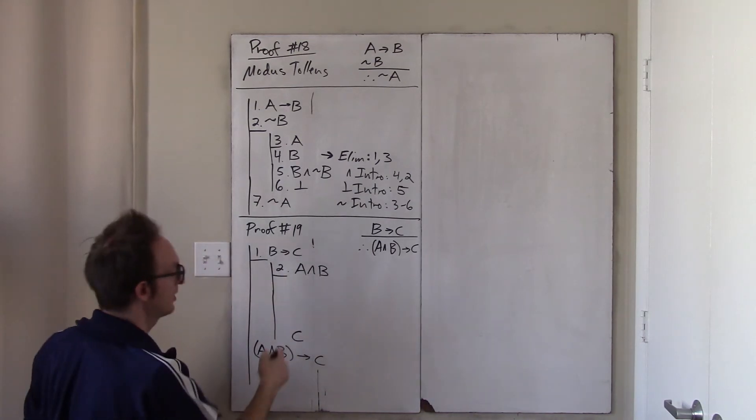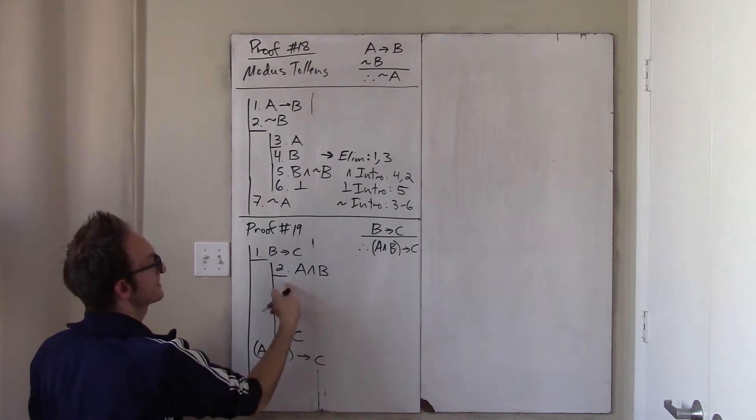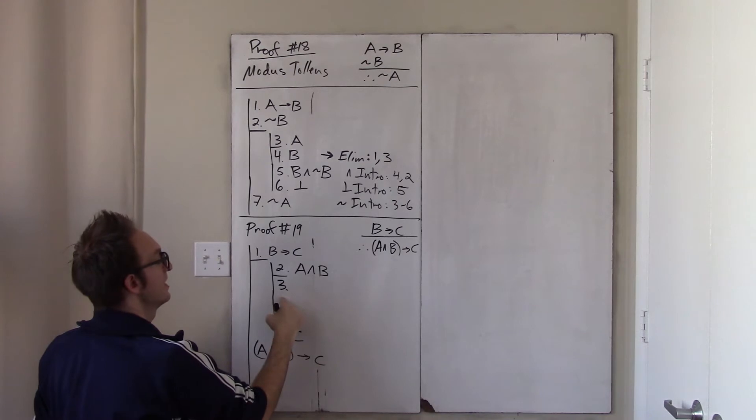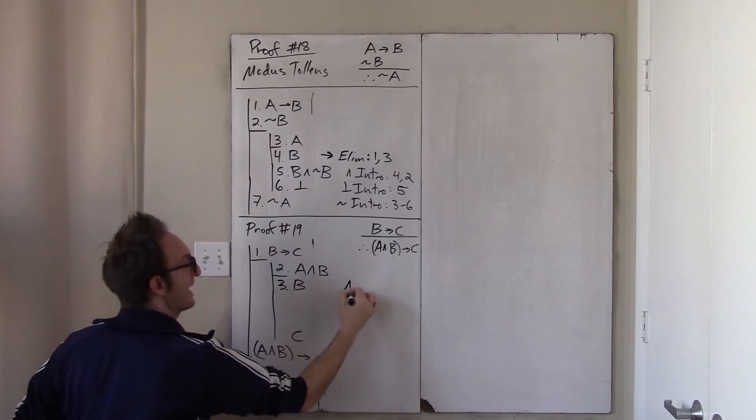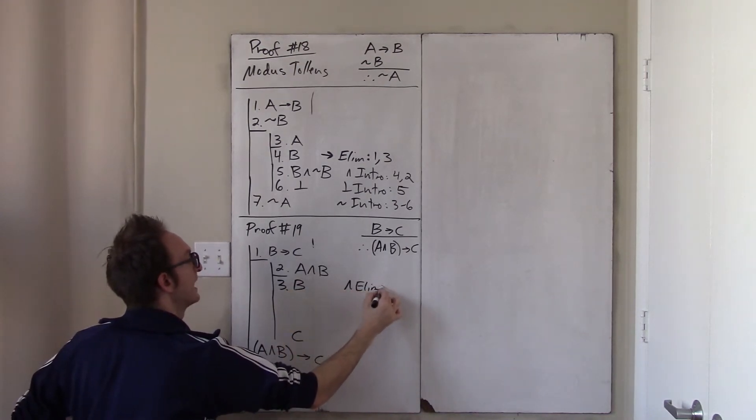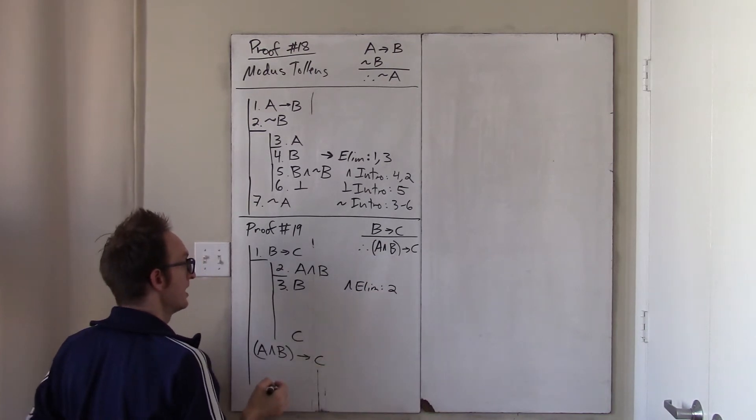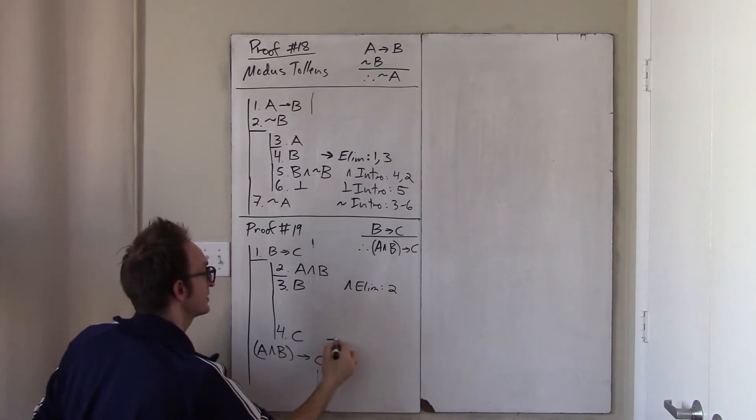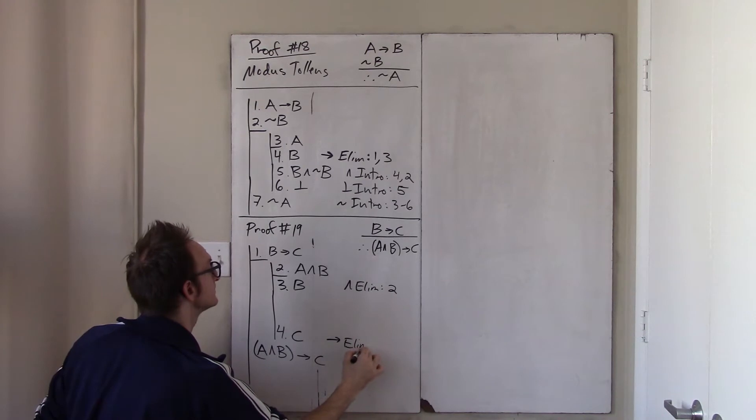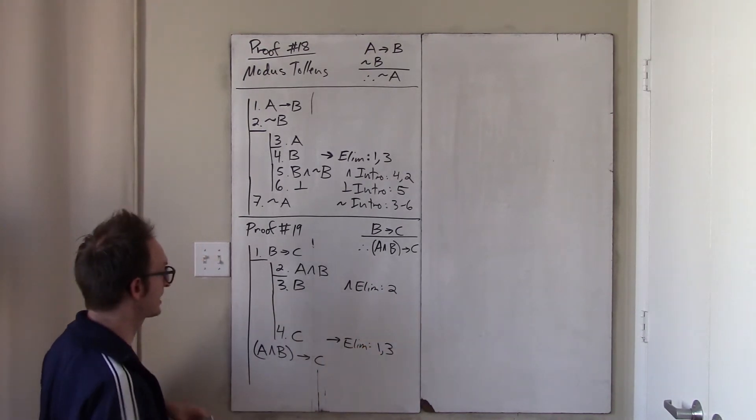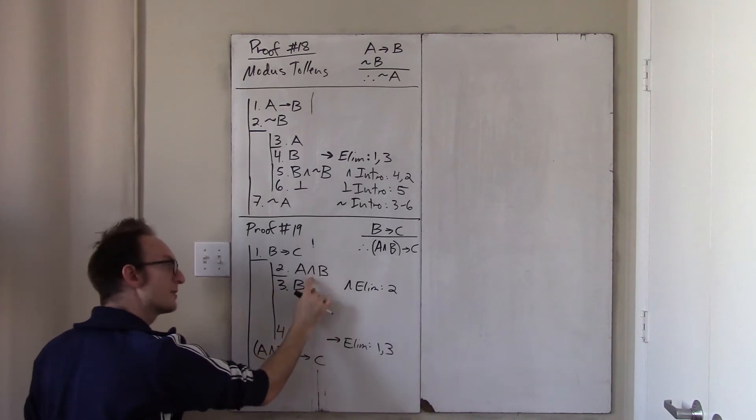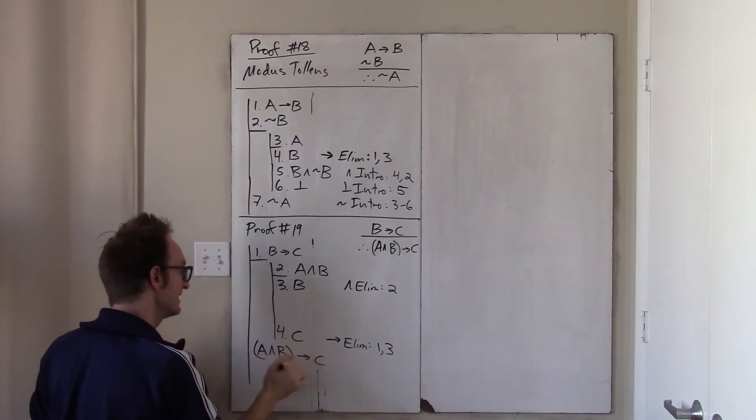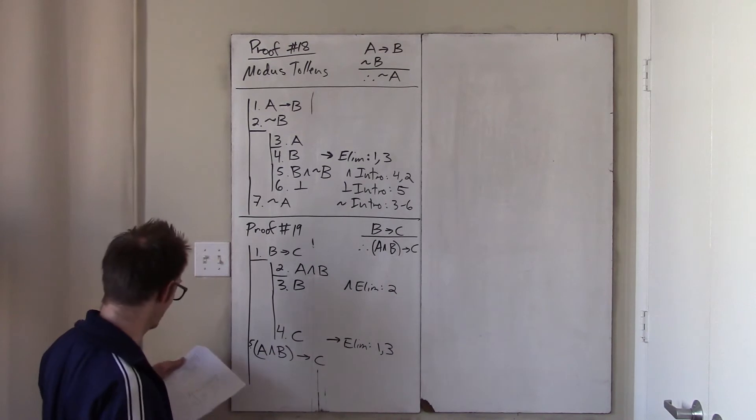And okay, it's pretty clear, I think, how to get here. Because if I have A and B, well, then I have B by and E-lim 2. And now, just right away, I get line 4 from 1 and 3. So that's arrow E-lim 1 and 3. But now, look, I did it, right? I started with A and B, I derived C. And so now I'm back in the main body of the proof on line 5. This entire proof is sort of over now.